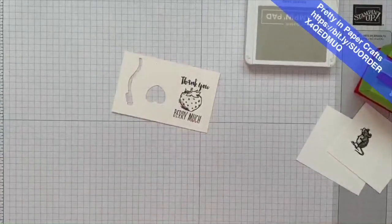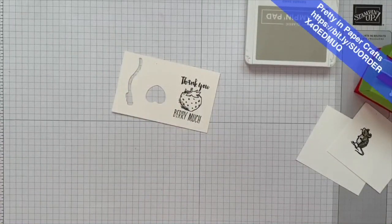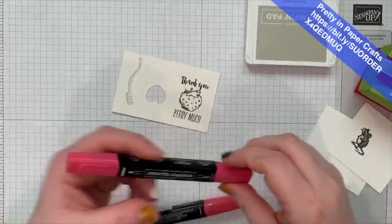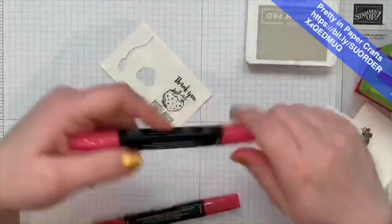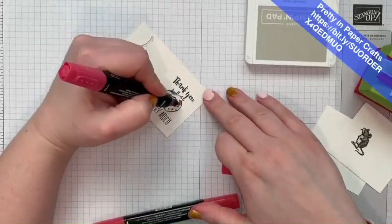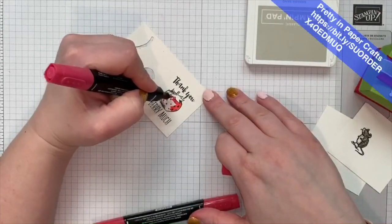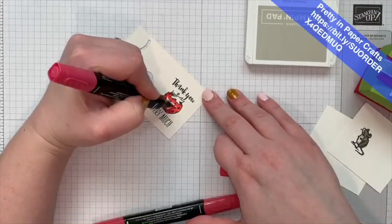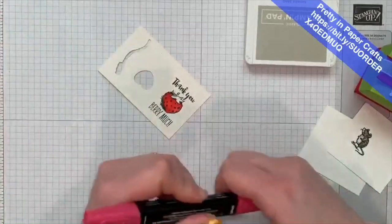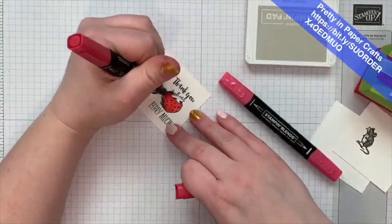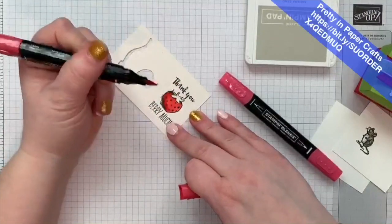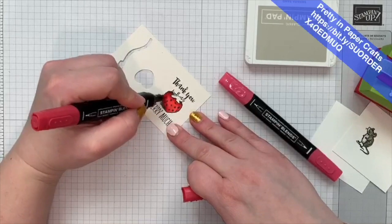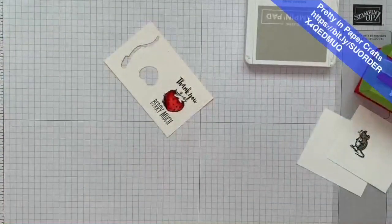This one we need to color and then we'll cut out by hand. So, I used Real Red and Granny Apple Green. Oh, no. I lost my video. My coloring's funny looking this early in the morning. Oh, the tip of my Real Red has seen better days. Okay. So, I did some shading with my Strawberry.